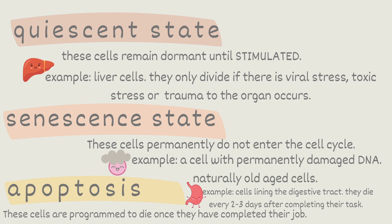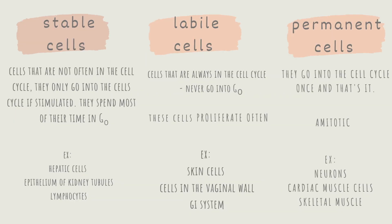Lastly, there are three types of cells you should know. One is stable cells. These cells are not often in the cell cycle. They only go into the cell cycle if stimulated. They spend most of their time in G0, the resting phase. This includes hepatic cells or liver cells, epithelium of the kidney tubules and lymphocytes.